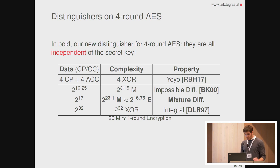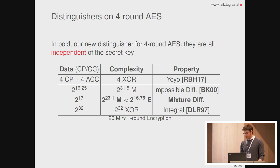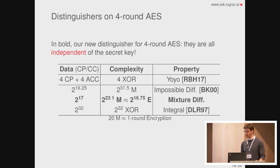For comparison: the distinguisher I just proposed requires 2^17 chosen plaintexts or ciphertexts, can be set up in the decryption direction, and has a cost of approximately 2^17 encryptions. Compared to the impossible differential, the data cost is slightly smaller but the complexity is much higher. Compared to the integral distinguisher, the data cost is much higher but the complexity can be smaller depending on the cost of evaluation. For completeness, there is also the yoyo distinguisher proposed two years ago, which requires just four chosen plaintexts and four adaptive chosen ciphertexts.